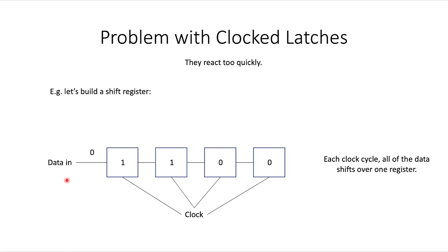Now let's change the input wire to a zero and run the clock again. On the next clock cycle the two ones that were here shifted over. The zero at the end got deleted and replaced by the zero that was here, and the zero in the input wire got pushed into the first box. Over the next three clock cycles the two ones in the middle shift over and over until we're back to the original state, with zeros being fed into this circuit the whole time.